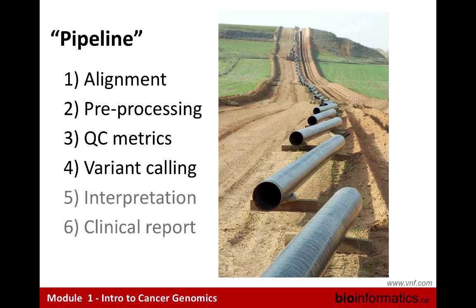The idea is: take the text file, align it to a reference — in this case a human genome reference sequence that anyone can download. Pre-processing cleans up the alignment in difficult areas. QC metrics check: did all your reads align to human, did you do a human experiment, does it look like the cancer you are studying? Variant calling calls out mutations, translocations, and copy number alterations. And finally, interpreting variants and writing a clinical report to communicate the analysis to clinicians who may act on it.